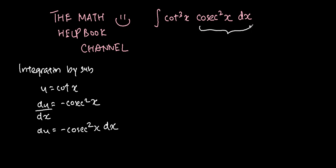Now this is my du. Looking at the question, cotangent cubed x expressed in terms of u would be u cubed. So this equals the integration of u cubed du with a negative sign.